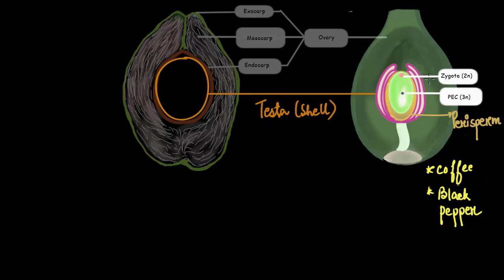Since we don't have perisperm in coconut, we immediately get the embryo sac after the testa. In the embryo sac we have the zygote and the primary endosperm cell. The zygote can only grow if it has something to feed on. That requirement is fulfilled by the primary endosperm cell, which multiplies to form a nutritive tissue. Until there's a decent amount of endosperm formed, we won't see any growth in the zygote. And guess what? This endosperm is the water we get inside the coconut. But wait, what about the coconut kernel?